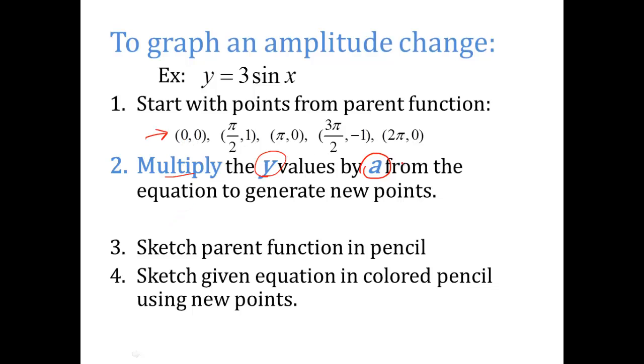For instance, if these are my parent function points, this is my equation. a in this equation is a 3. So all I'm going to do is create my new points by multiplying the y value by 3. Well, 0 times 3 is still 0. The x values stay the same. The y value, 1 times 3 is 3. Next point, π, 3 times 0 is still 0.